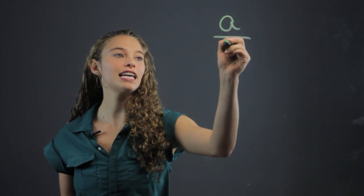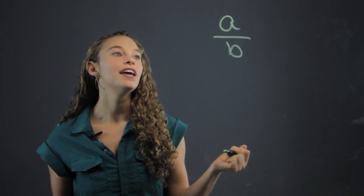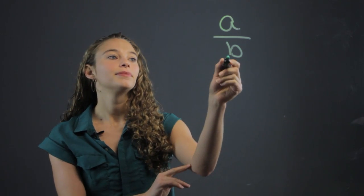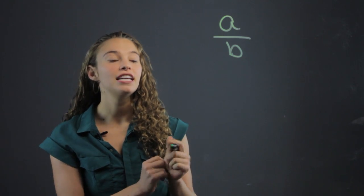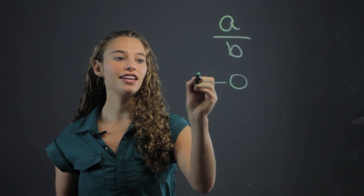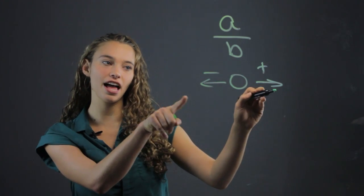The definition of a rational number is something that can be expressed as A over B, a fraction. So anything that you can write as A over B is a rational number. This includes zero, all negative numbers and positive numbers, in both directions on the number line.